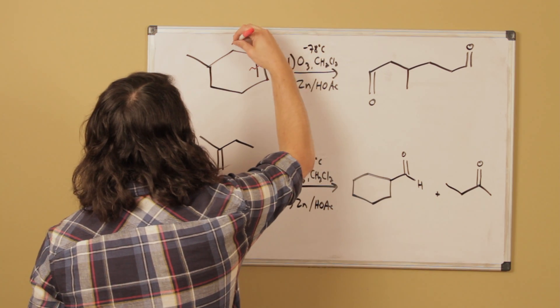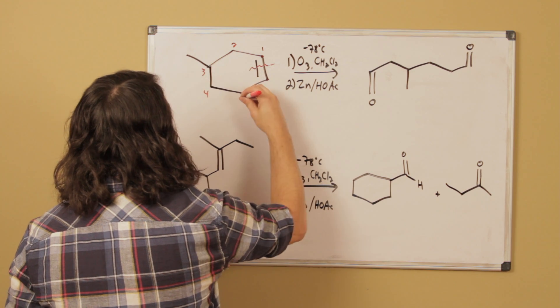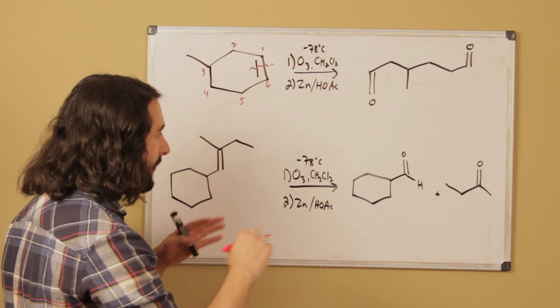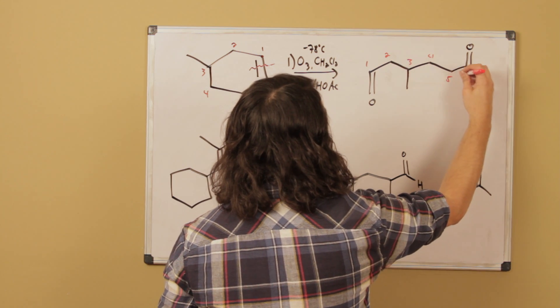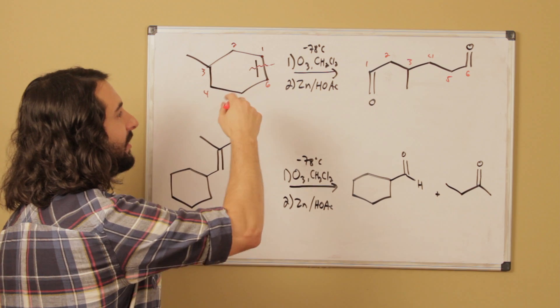So let's number these: 1, 2, 3, 4, 5, 6. And now when we write that out we've got 1, 2, 3, 4, 5, 6. So we've got our six carbons.